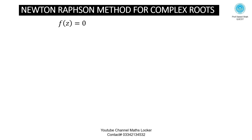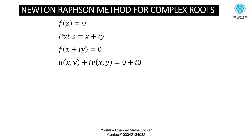f(z) = 0 is the equation. f(z) = x + i·y — this is the required form. f(x + i·y) = 0. When we substitute z = x + i·y into the equation f(z) = 0, after simplification, f(x + i·y) can be expressed in the form u(x, y) + i·v(x, y) = 0 + i·0.